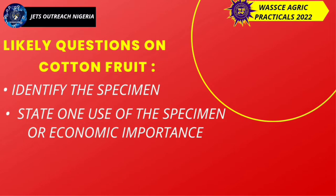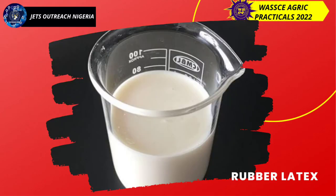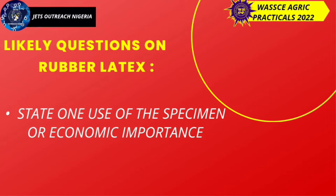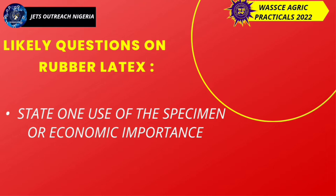Likely questions for cotton fruit are: identify the specimen, state one use of the specimen or economic importance. Your answer is: the cotton fruit is used as food. Next is rubber latex. Likely question: state one economic importance of the specimen. Your answer is: rubber latex is a raw material for the rubber industry.